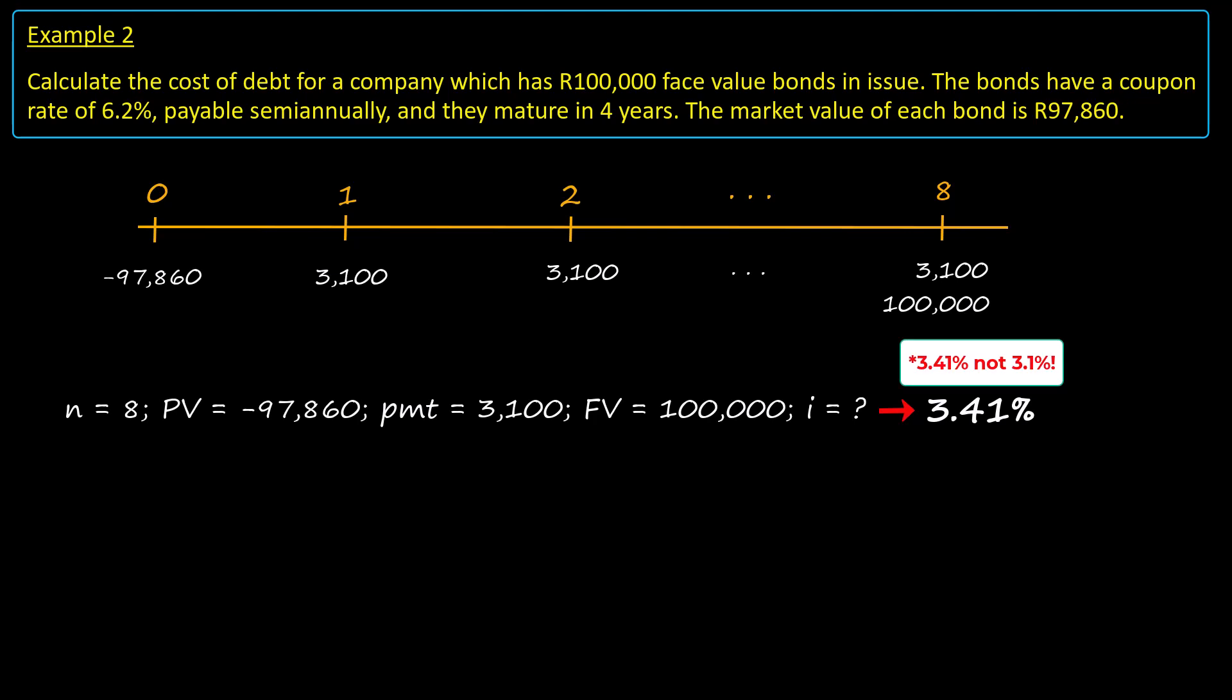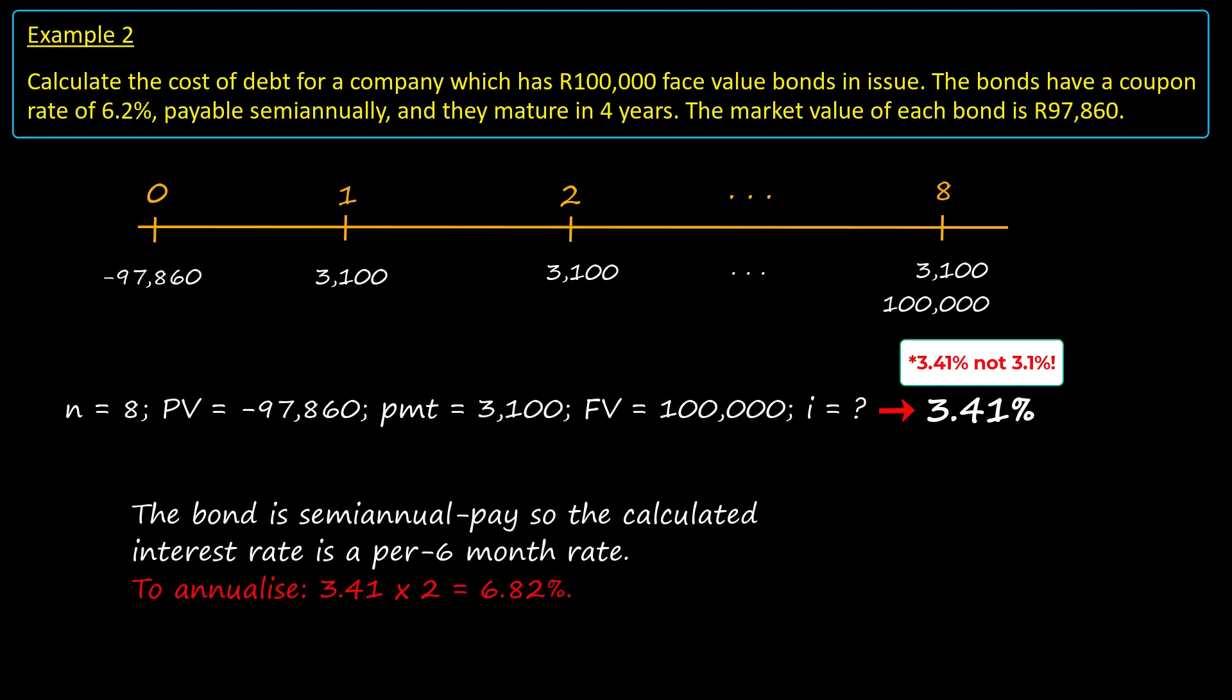This is not the final answer, however, because the calculated rate of 3.1% is a per 6 month rate. The cost of debt must be an annual rate, and so we double the 3.1% to determine a final answer for the cost of debt of 6.2%.